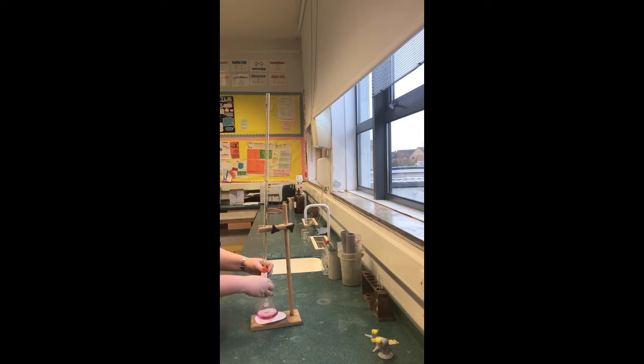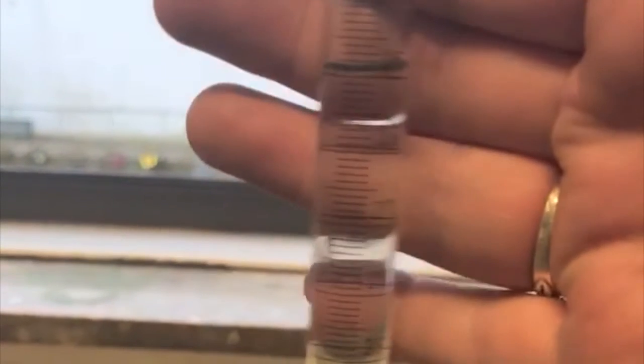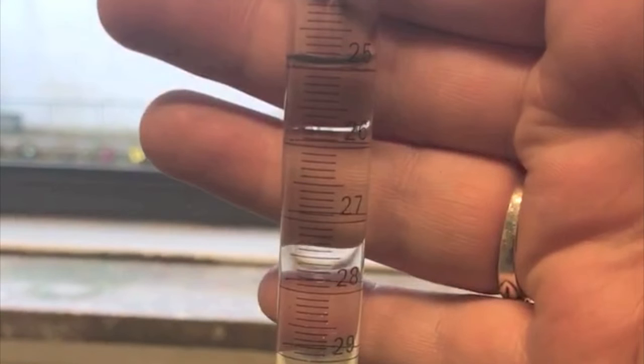The end value from the burette is then noted. In this case, it was 24.9. The added volume, called a titer, is calculated. For this titration, it is 20.1.